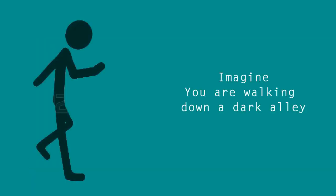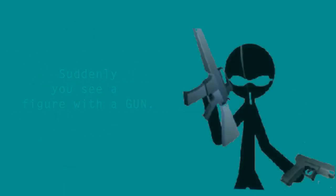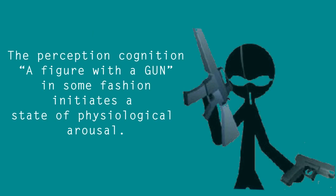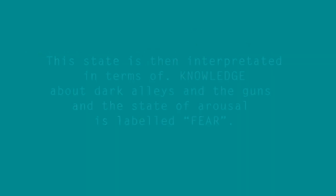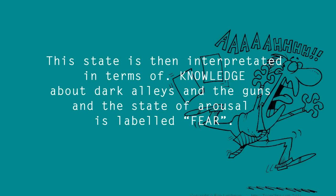For example, imagine you are walking alone down a dark alley and suddenly you see a figure with a gun. The perception — a figure with a gun — in some fashion initiates a state of physiological arousal. This state is then interpreted in terms of knowledge about dark alleys and guns, and the state of arousal is labeled fear.